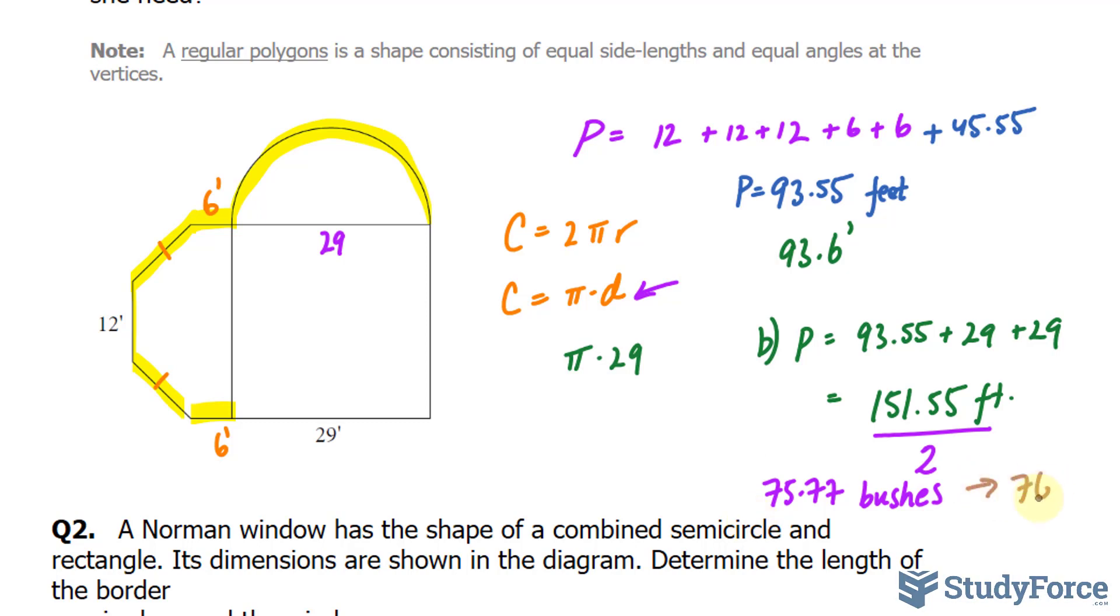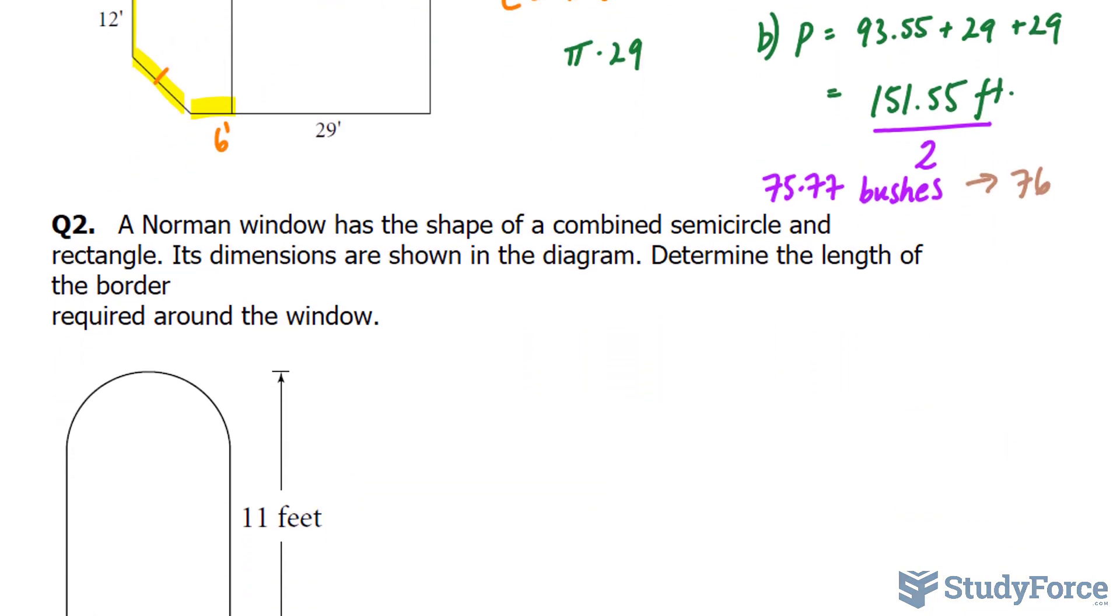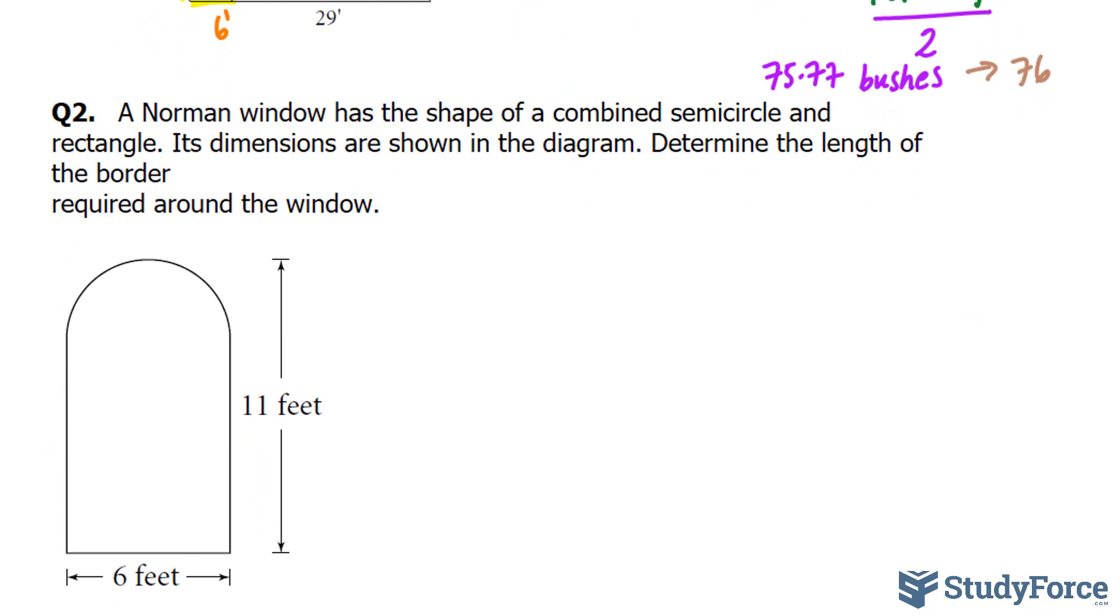If you buy 75, unfortunately, you'll be short. So 76 rose bushes will be needed. In question two, a Norman window has the shape of a combined semicircle and rectangle. Its dimensions are shown in the diagram, determine the length of the border required around the window.